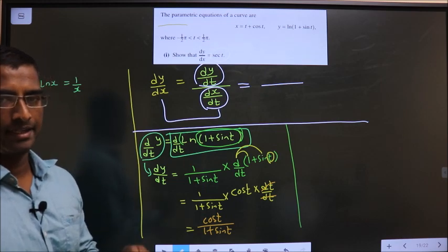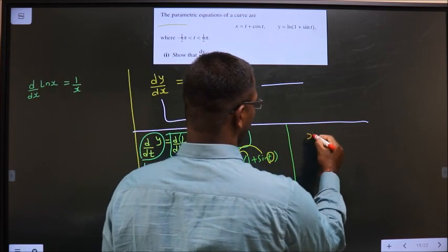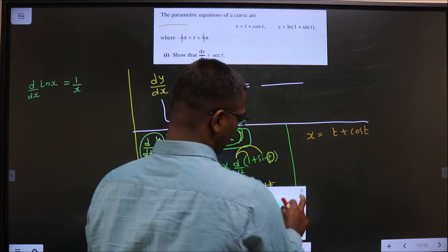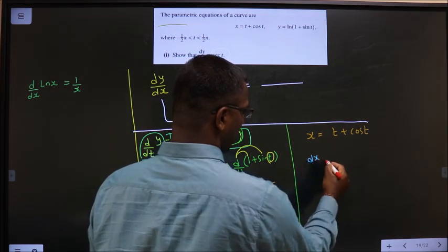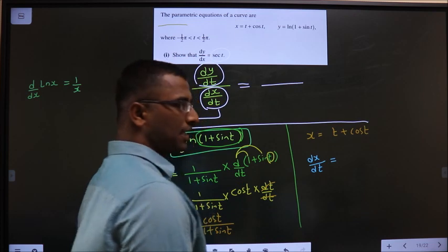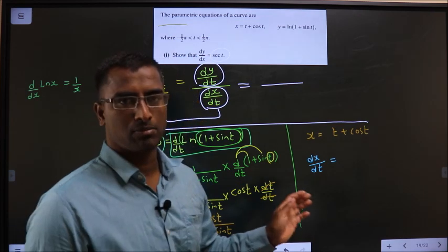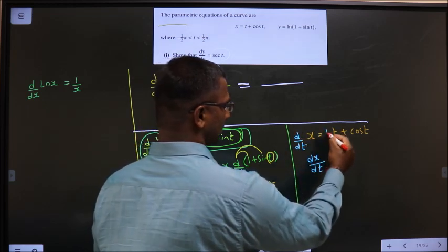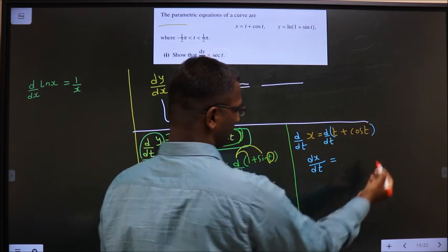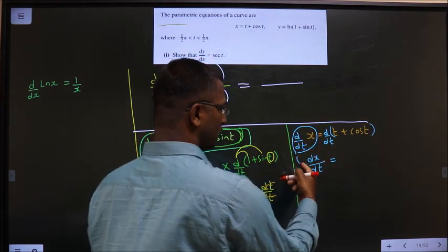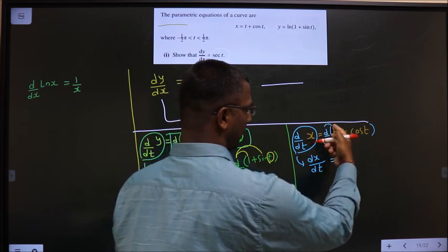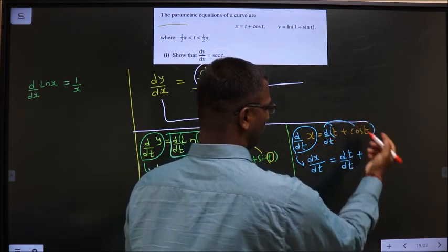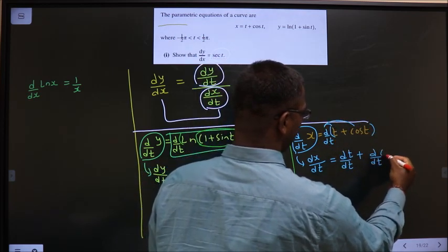Let us find dx by dt. For that x equal to t plus cos t. Now from x to get dx by dt, that could only happen if you take differentiation on both sides. What do I mean is take d by dt on both sides. Now here no change. So as it is I write. And here apply this to t. So what do you get. d by dt of t plus apply this to cos t. So d by dt of cos t.